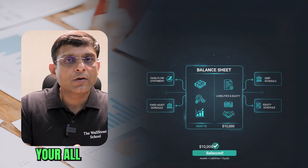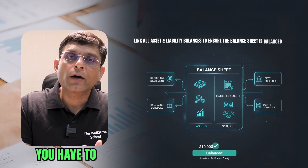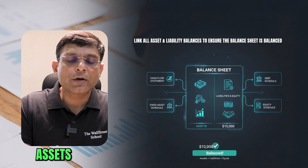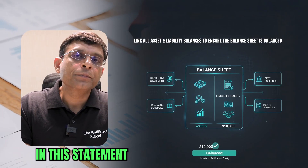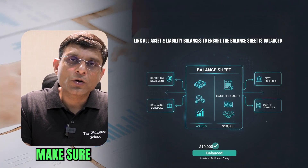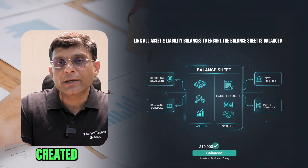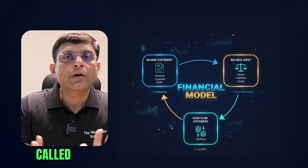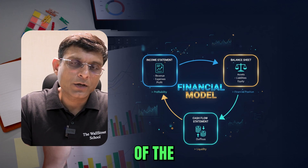You have to link all balances of your assets and liabilities in the balance sheet and make sure it is balanced. Once you have created these three statements, this is called a financial model — it is nothing but the projection of the three key financial statements of a company or business.